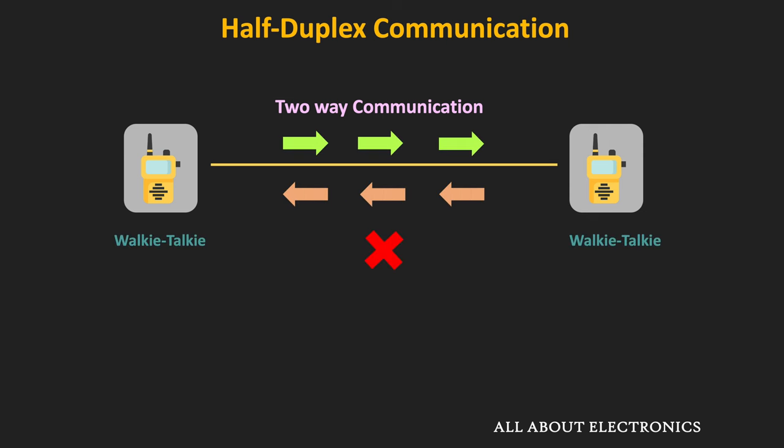A walkie-talkie with a push-to-talk button is an example of half-duplex communication, where at a time only one person can talk.